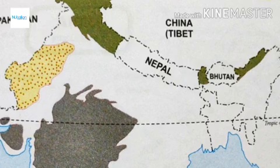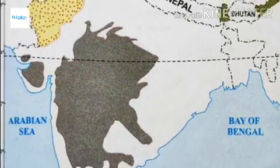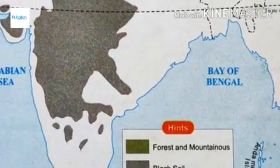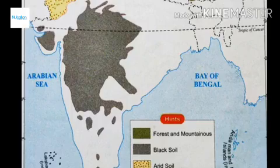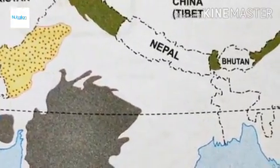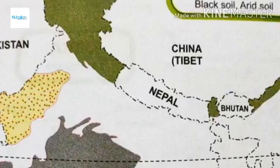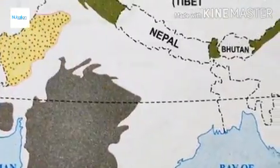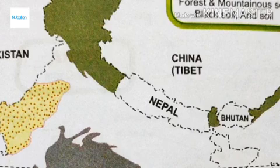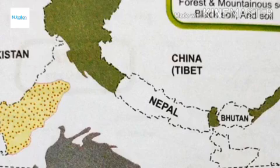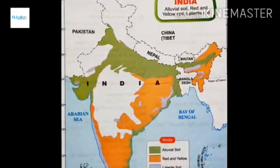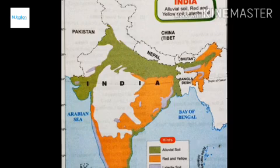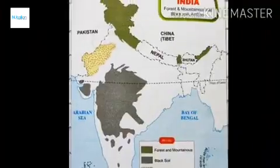Black soil is used for cotton production — the cotton you use to make the clothes you wear. The yellow area on the map represents the arid region, which is in the desert areas, where millets and barley are grown. Note that these soil-type maps may not come directly in your examination, but you should know about them.